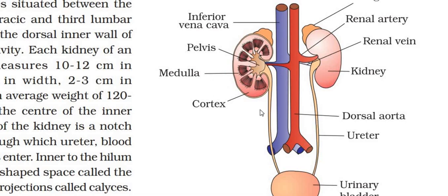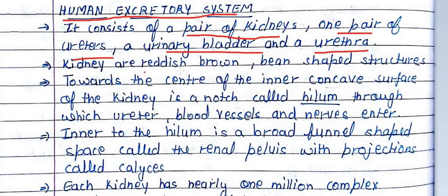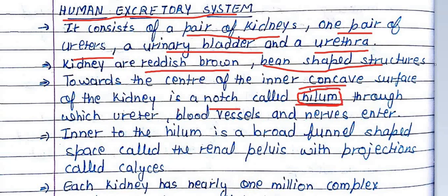The kidney is a reddish-brown bean-shaped structure. If we look at the concave surface, there is a notch which we call the hilum. The hilum is the portion where structures like the ureter, blood vessels, and nerves enter the kidney.